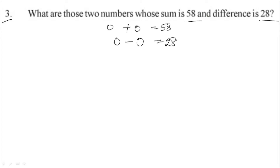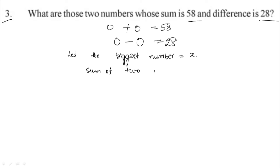Let the biggest number be equal to x. The sum of the two numbers is equals to 58, and the difference between those two numbers is 28.